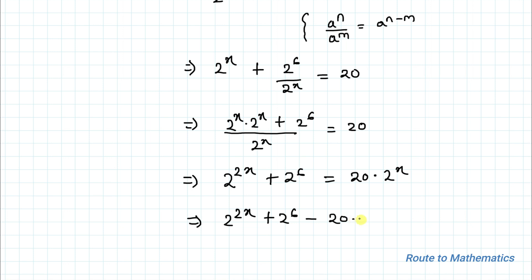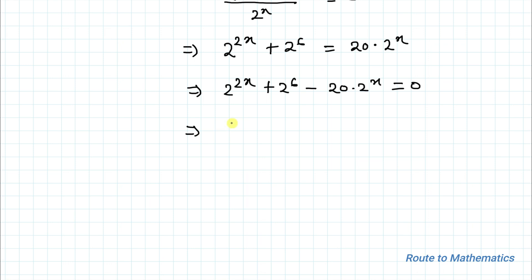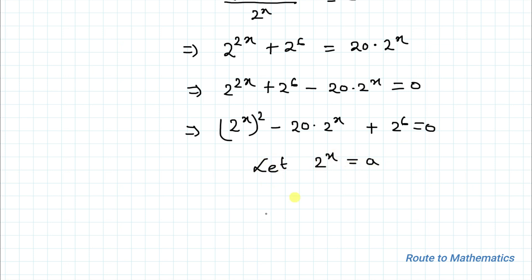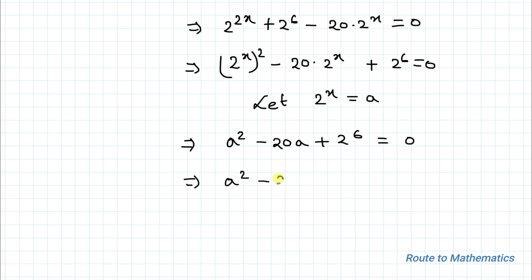Taking all terms to the left-hand side: 2 to the power 2x minus 20 times 2 to the power x plus 2 to the power 6 equals 0. We can write this as (2 to the power x) squared minus 20 times (2 to the power x) plus 64 equals 0. Now let's substitute a equals 2 to the power x, so our equation becomes a squared minus 20a plus 64 equals 0.